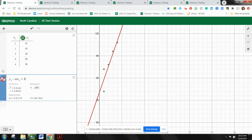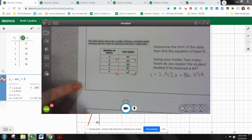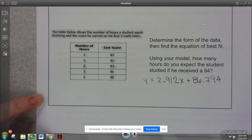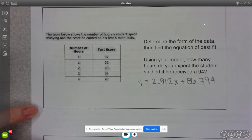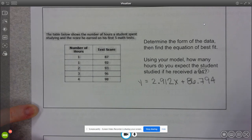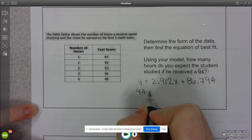So I'm going to write down this equation. y equals 2.912x plus 86.794. I'm going to come back to my screen. So this is the equation we just found. They're telling us that our y value is 94. The person received a 94 on the test. So this is very similar to the one we did before.